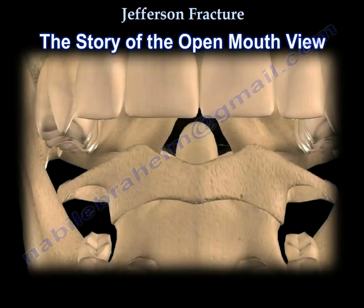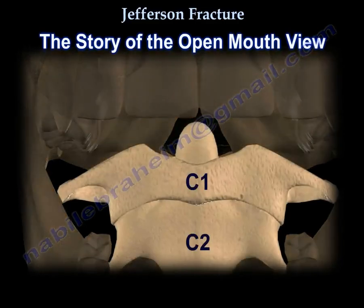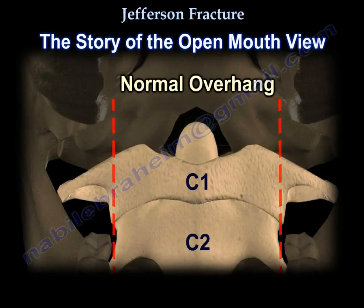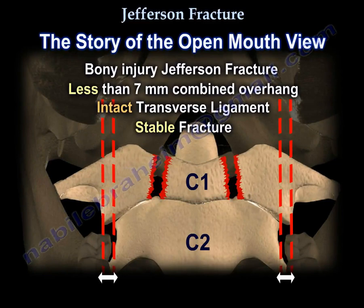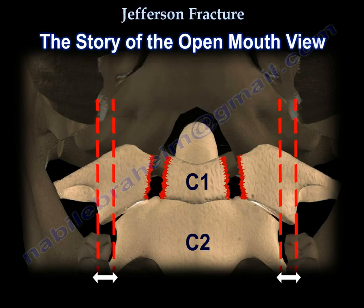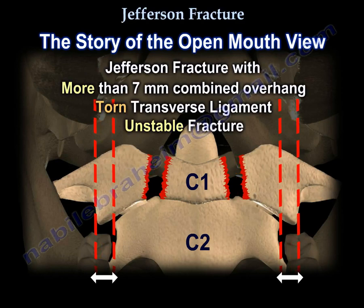Regarding the open mouth view: this shows the normal overhang. If it is a bony injury only, the combined overhang will be less than 7 mm, meaning the transverse ligament is intact and it is a stable fracture. If you see a Jefferson fracture with more than 7 mm combined overhang — approximately 8 mm with magnification — then the transverse ligament is probably torn, indicating an unstable fracture.